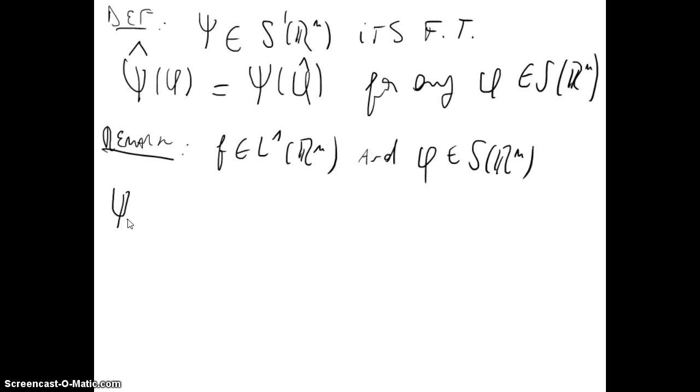ψ̂_f(φ) will be equal to ψ_f(φ̂), I forgot here the transform, so the transform of ψ now because of this would be the transform of φ. That will be equal, as we saw before, to the integral over R^n of f(x) multiplied by φ̂(x) dx.